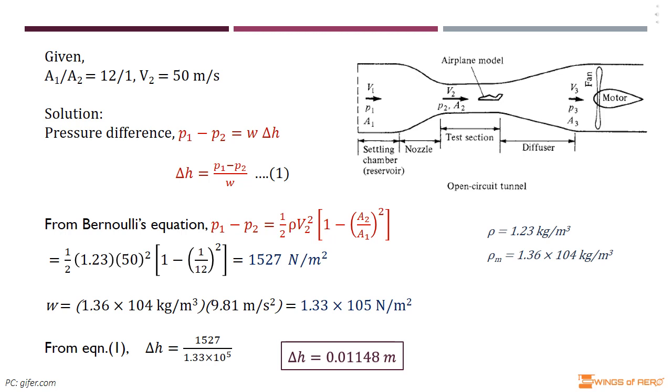The contraction ratio is also given. By substituting these values in Bernoulli's equation, we get the pressure difference p₁ minus p₂ equals 1527 N/m².